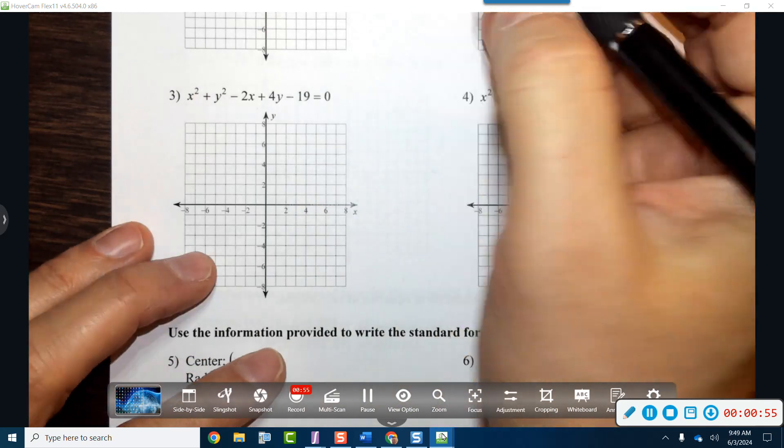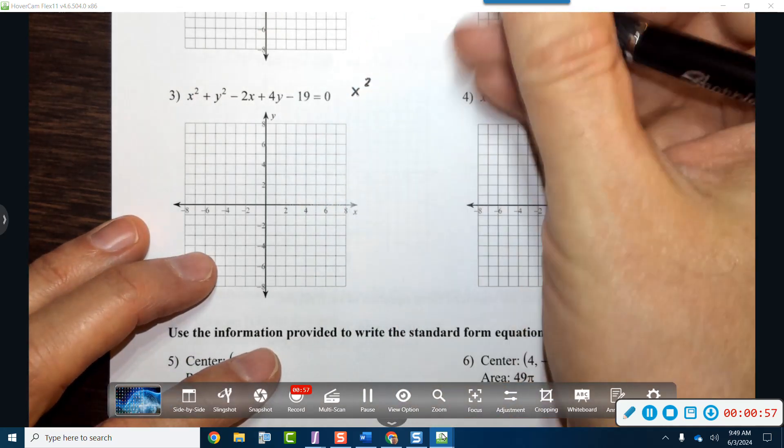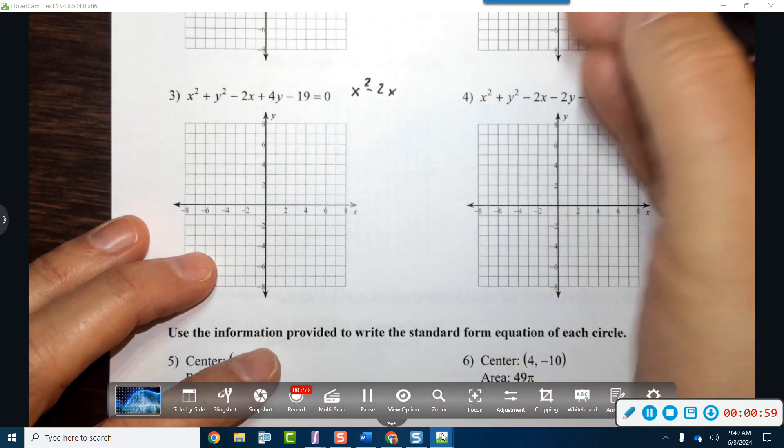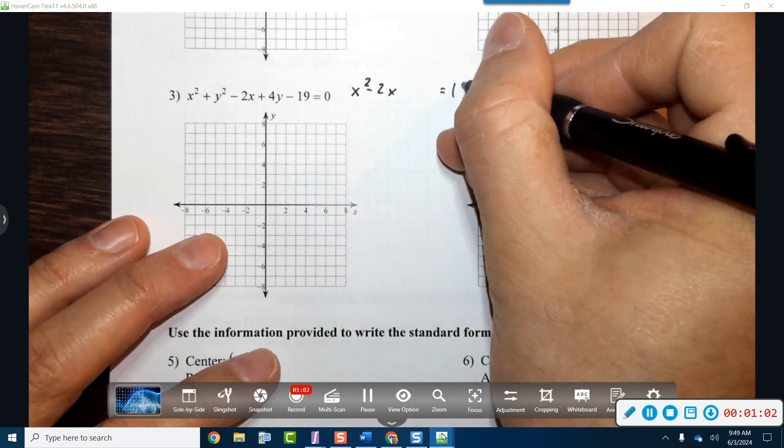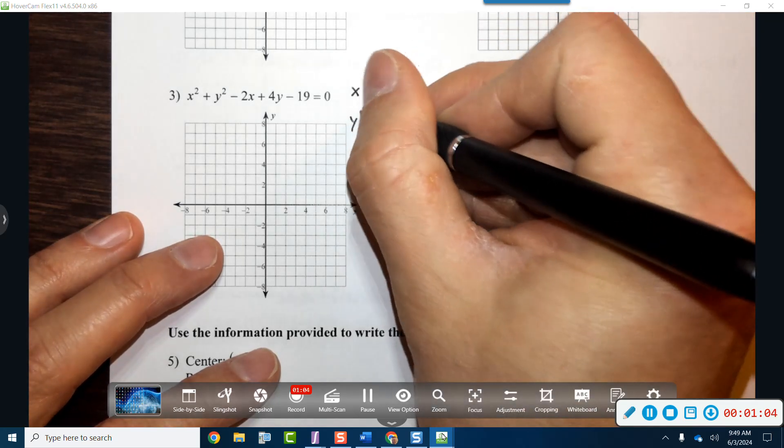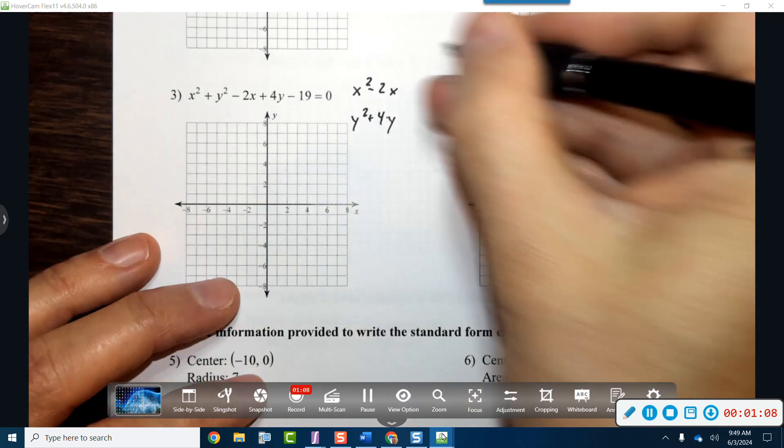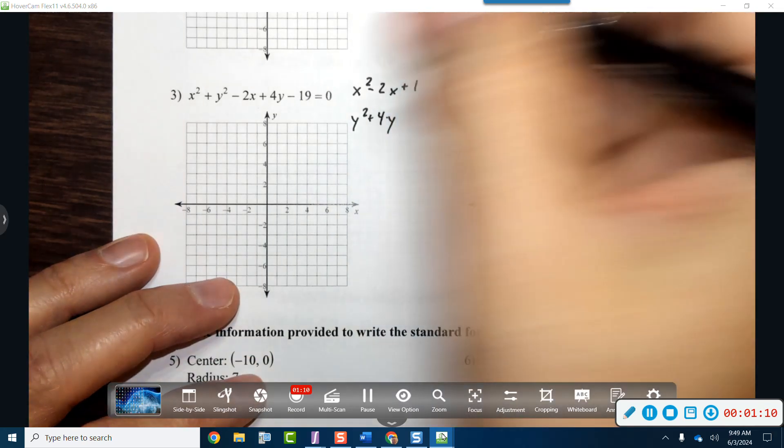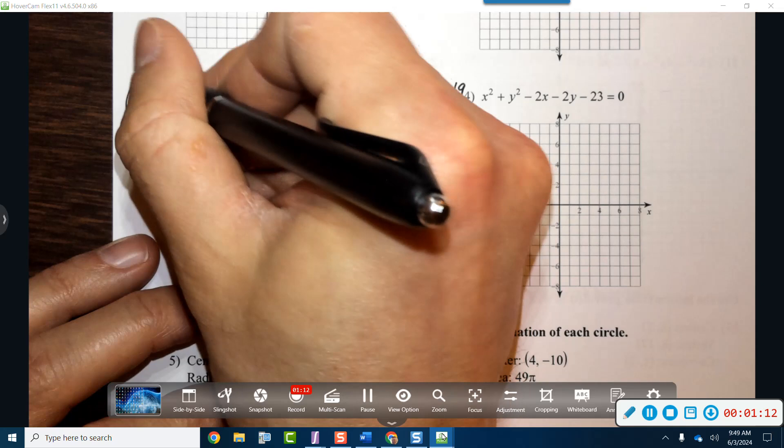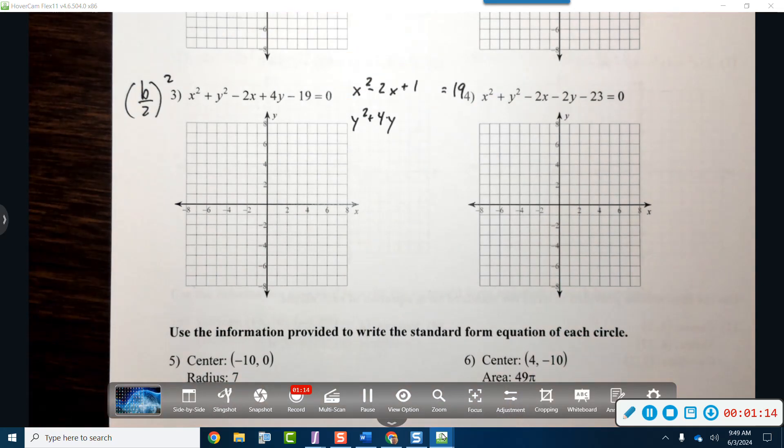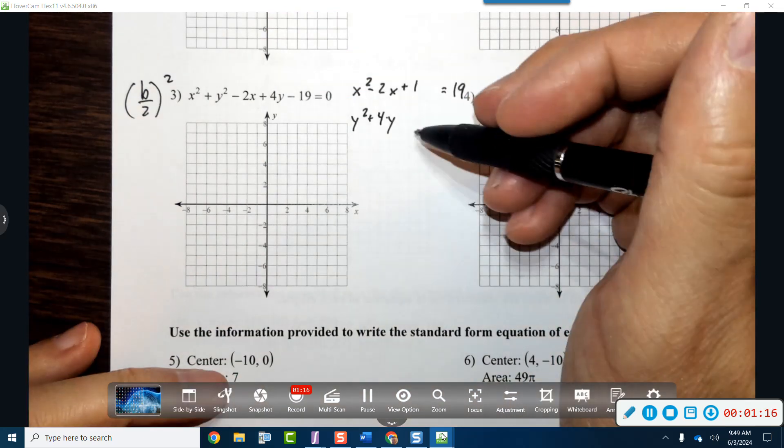All right, now here's where it gets a little trickier because we do have to group these guys up. For space, I'm gonna go ahead and just put the x's next to each other and I'm gonna put the 19 over on the other side, and I'm gonna put the y's next to each other. Then for this guy I'm gonna add a plus 1 because remember there is a formula you just have to memorize, because your goal is to create a perfect square trinomial.